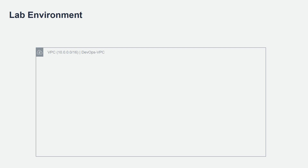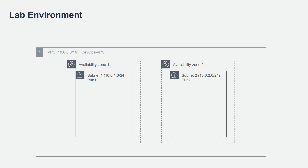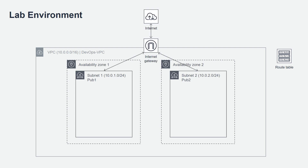Your instructor has already provisioned a CloudFormation template in the account given to you to execute these labs. That has created a Virtual Private Cloud with the CIDR block 10.0.0.0/16, which we call the DevOps VPC. The DevOps VPC has two subnets, pub1 and pub2, in two availability zones. We have also created a route table that allows you to route traffic to the internet through an internet gateway, so that you can connect into the EC2 instances we are going to spin up in these subnets. The route table also allows any traffic to flow between the two subnets. This network configuration is already provisioned in your lab environment when you log into your AWS console.